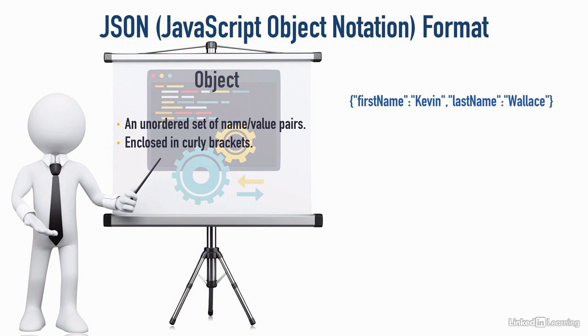That's the first name-value pair. Then there's a comma, and we've got last name. Again, that's a string, so it's in quotes. And the value is Wallace, another string, so it's in quotes. And the name and value are, again, separated with a colon. And it's all enclosed in curly brackets.